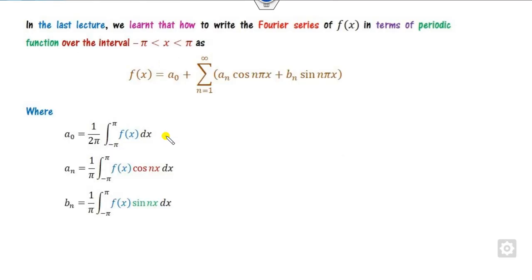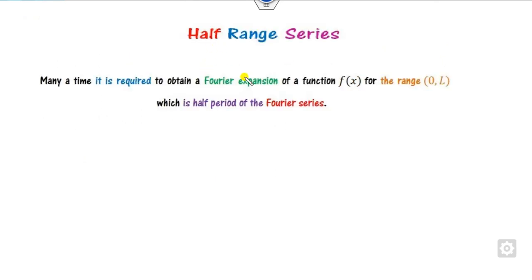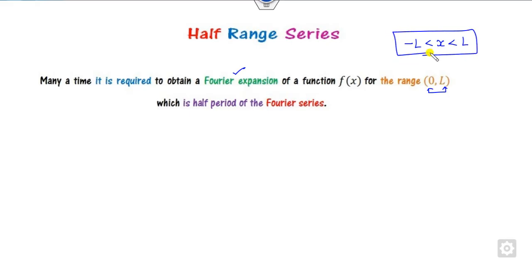What we discussed in the last class is finding the Fourier series of the function f(x), which is periodic and defined on the domain from minus pi to plus pi, or in general when x lies between minus l to plus l. However, there are many cases where we require the Fourier expansion only in the range from 0 to l, which is the half period of the original series.